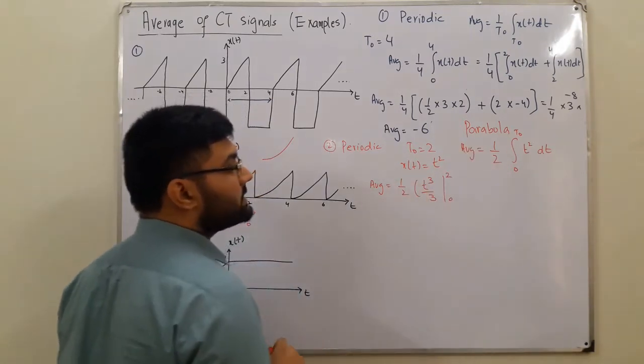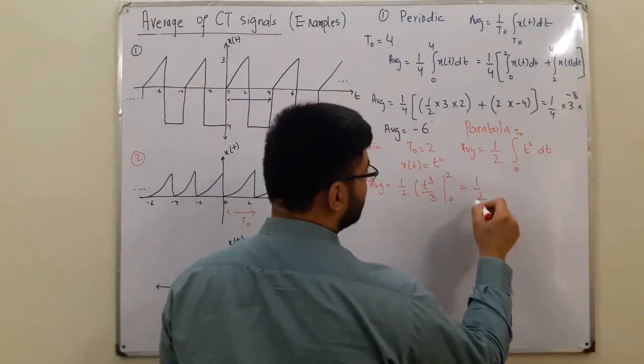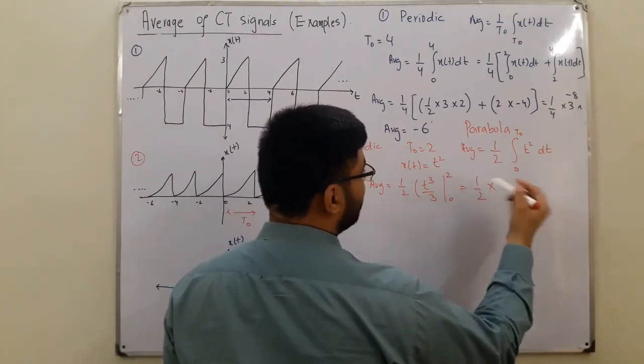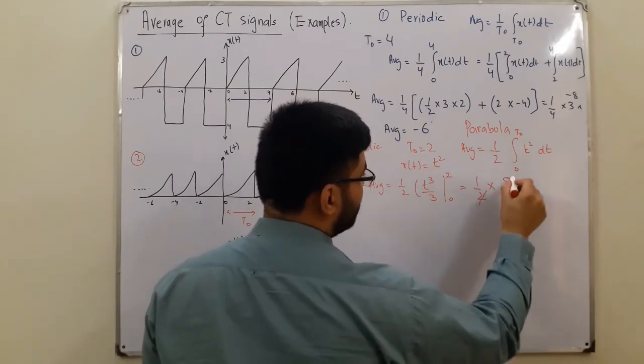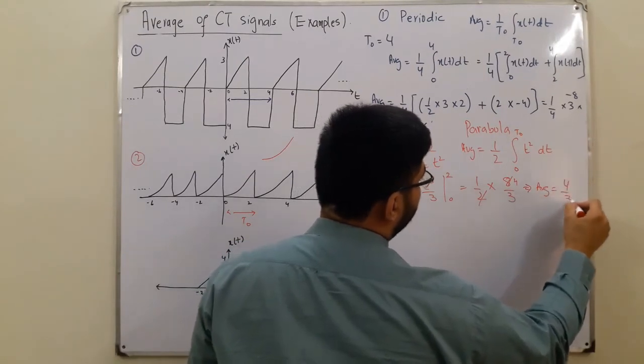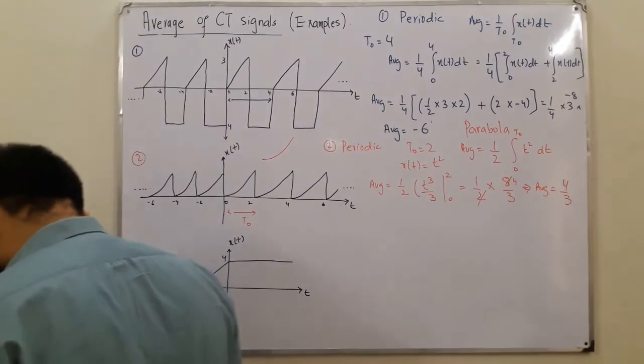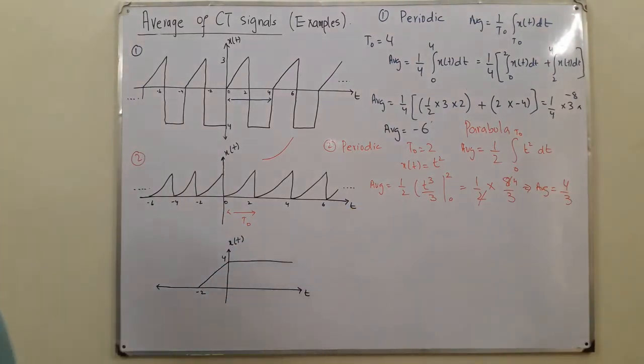So you directly put 2 in this case, so 2 to the power 3 is what? It's 8. 1 over 2 multiplied by 2 to the 4 and 4 to the 8 upon 3. So this would cancel out with this, and the average value would come out to be 4 by 3, isn't it? So it is. This is the answer, 4 by 3, fine.